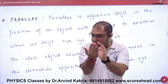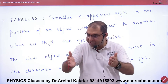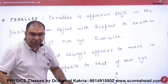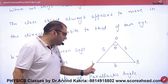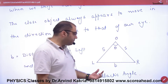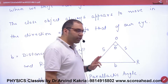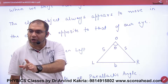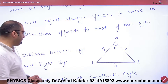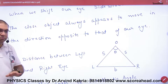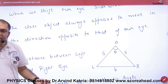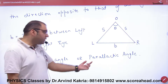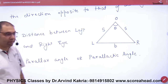Two points of view of one object give two different frames. The angle between those two lines of sight is called the parallax angle. If the distance between the two eyes is b and the distance to the object is S, then the angle θ equals arc divided by radius, so θ = b/S. From this, S can be calculated.